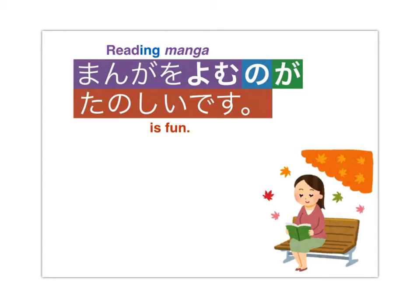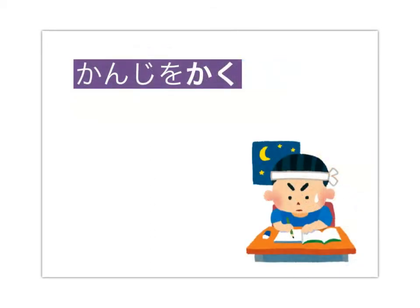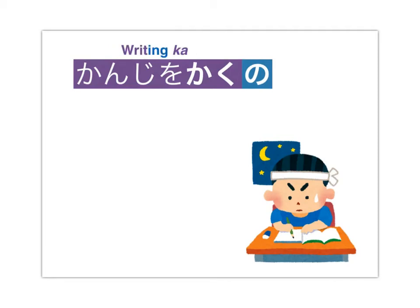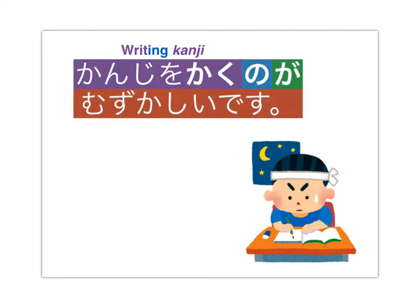Let's look at a few more examples to get you in the pattern and feel how this works. Kanji wo kaku — to write kanji. Put the particle no after the short version of the verb; that turns it into 'writing kanji.' Ga, and then whatever detail you'd like: muzukashii desu. Kanji wo kaku no ga muzukashii desu: Writing kanji is difficult.